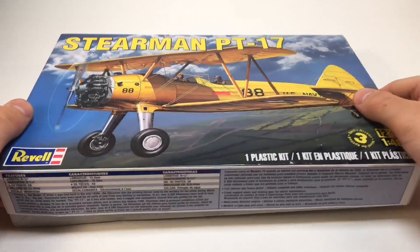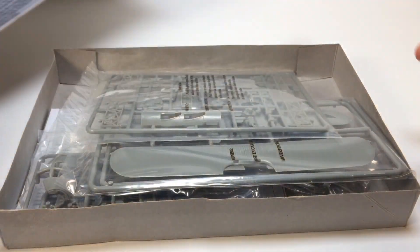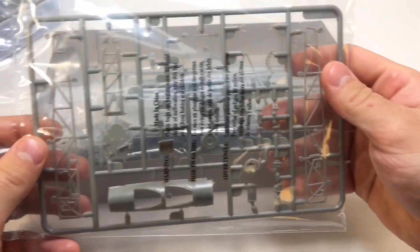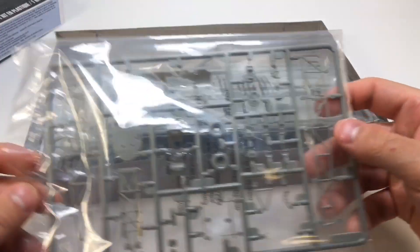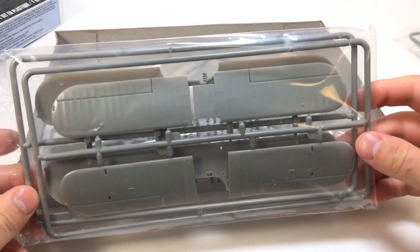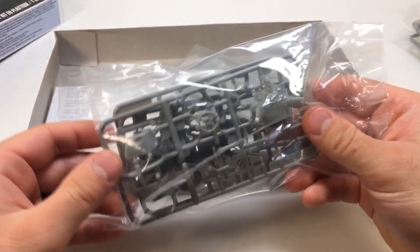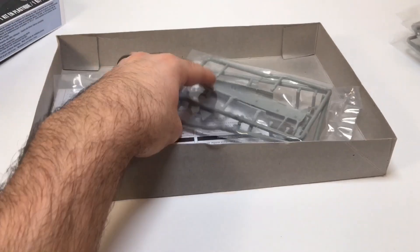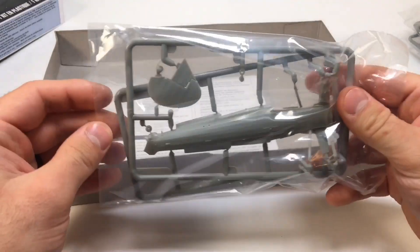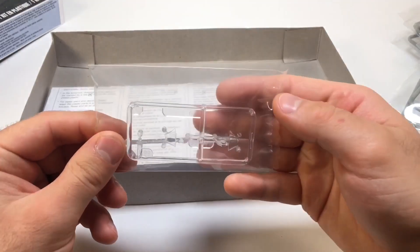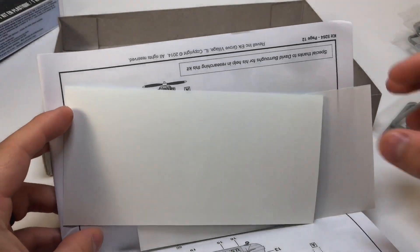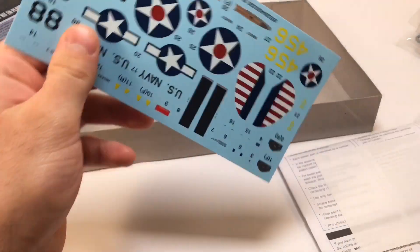So let's get right into the unboxing. Let's remove the top. The first thing you see is the first package. We've got the second, looks to be the wings. We've got the first package. We've got a fourth package, looks to be the fuselage. We've got the clear parts and glass, and we have the instructions. Inside the instructions are decals.